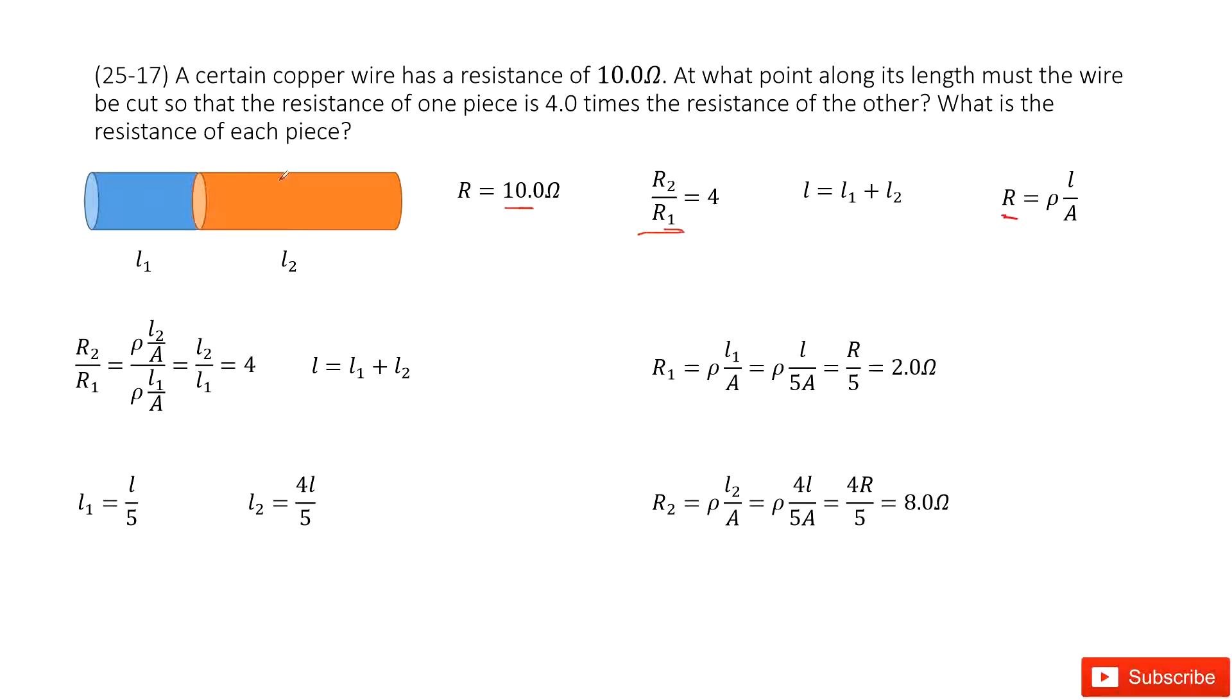We know the total length is L1 plus L2. As the given quantities tell you, the ratio R2 over R1 is 4. We can work on it one step further. We input the function for R2 as R2 equals ρ times L2 divided by A.